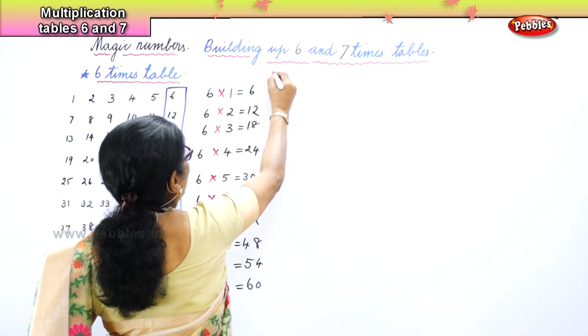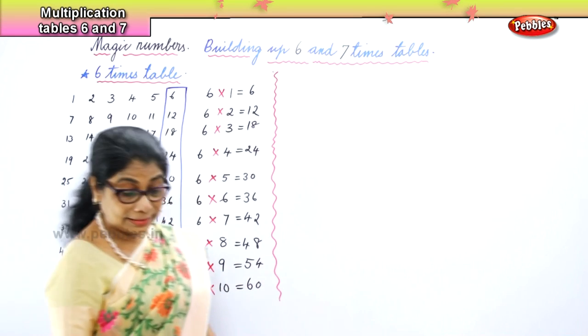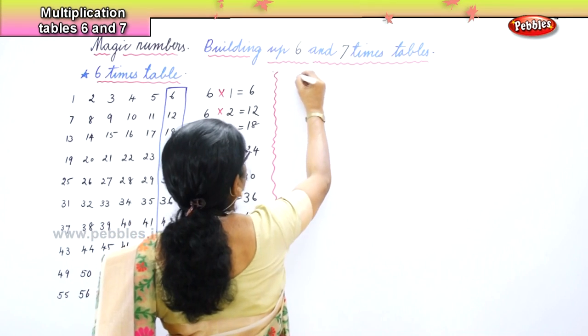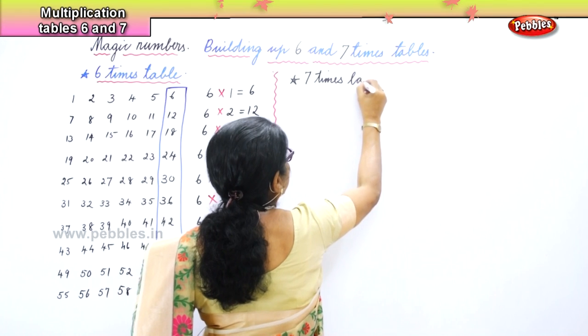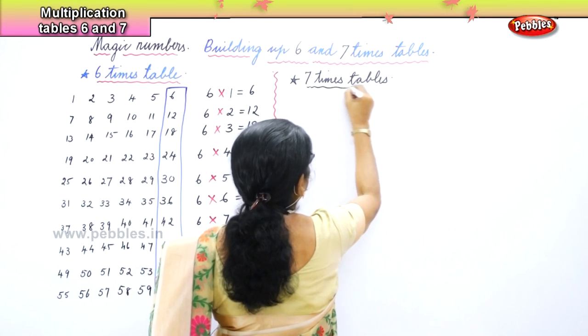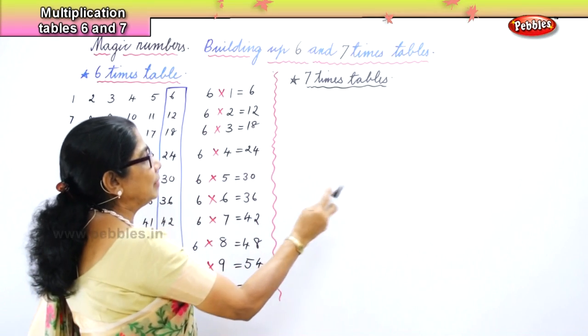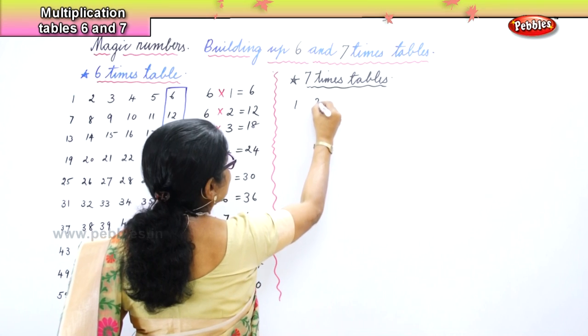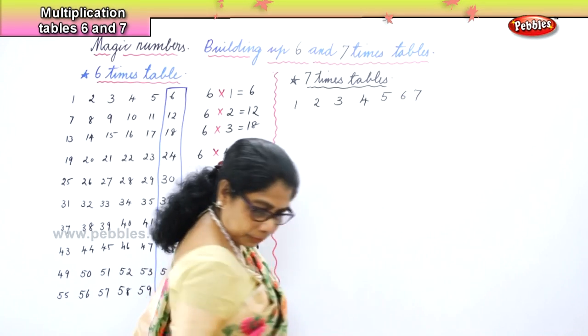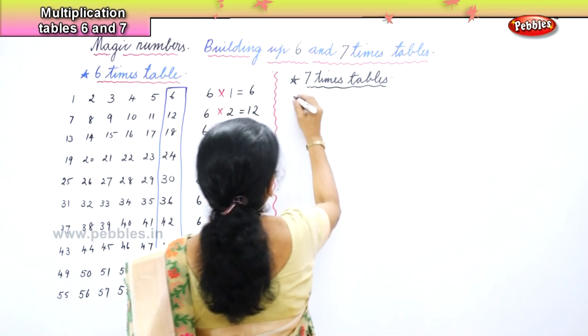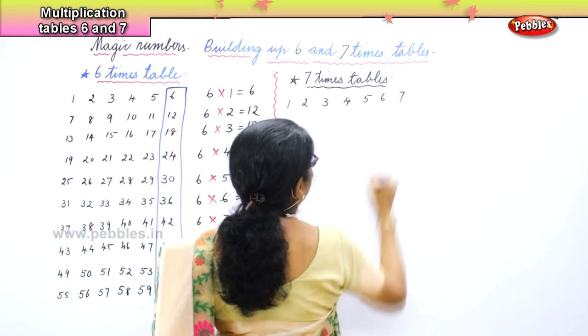Okay, now let's go on to build our 7 times table. Now we are going to do our 7 times table using magic numbers. In this rhythm, what do we do? We simply write 1 to 7 because it is 7 times table. You simply write 1, 2, 3, 4, 5, 6, 7. That's it.